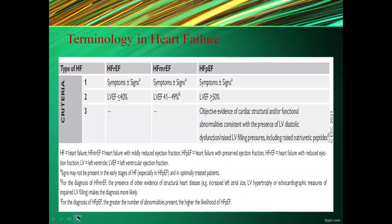Heart failure is also classified by ejection fraction. Heart failure with reduced ejection fraction (HFrEF) has EF ≤40%. Heart failure with mildly reduced ejection fraction has EF 41–49%. Heart failure with preserved ejection fraction (HFpEF) has EF ≥50%, which is very difficult to diagnose and requires other criteria such as objective evidence of cardiac structural or functional abnormalities consistent with LV diastolic dysfunction or raised LV filling pressures, including raised natriuretic peptide.